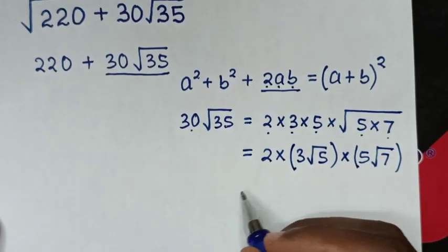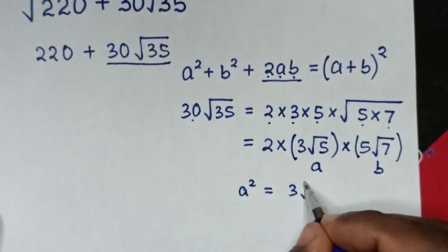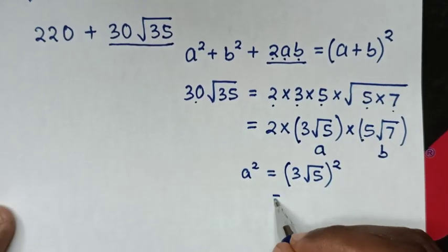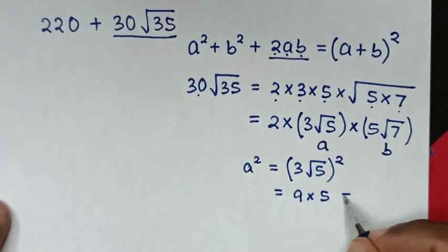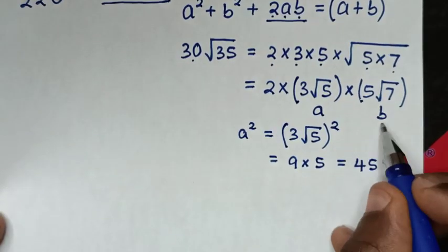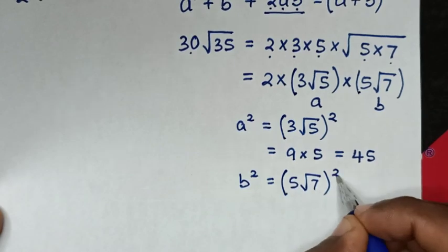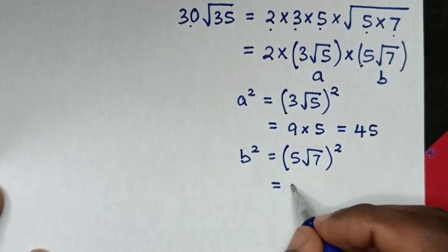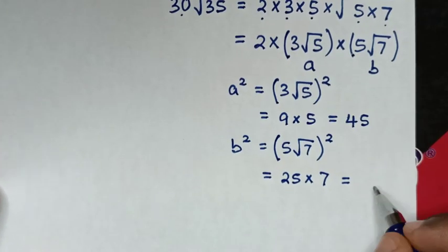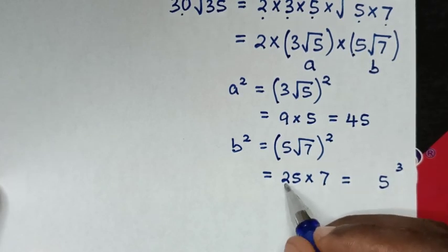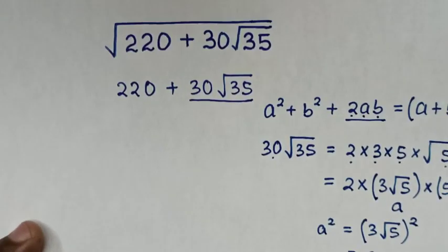In the next step, to find the value of a squared and b squared: since a is 3 square root of 5, a squared equals (3 square root of 5) squared, which equals 3 squared times 5, giving 45. Since b is 5 square root of 7, b squared equals (5 square root of 7) squared, which equals 25 times 7, giving 175. So 45 plus 175 equals 220, confirming the constant term.